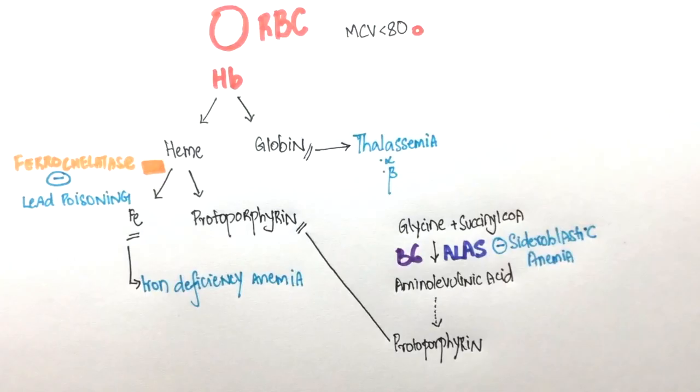People who have sideroblastic anemia either have a vitamin B6 deficiency or lack this enzyme. So in such cases, iron is available but the other components aren't. So not all types of microcytic anemia have low iron levels.